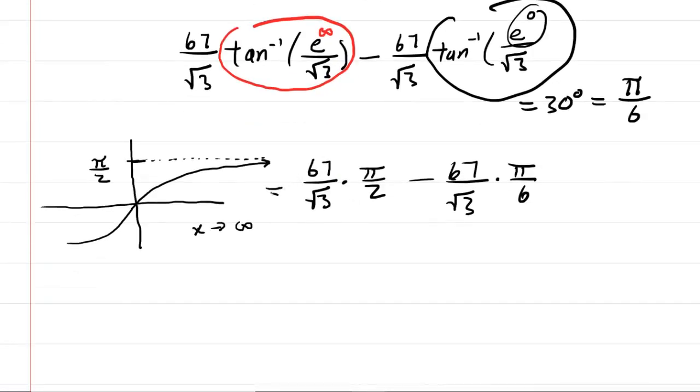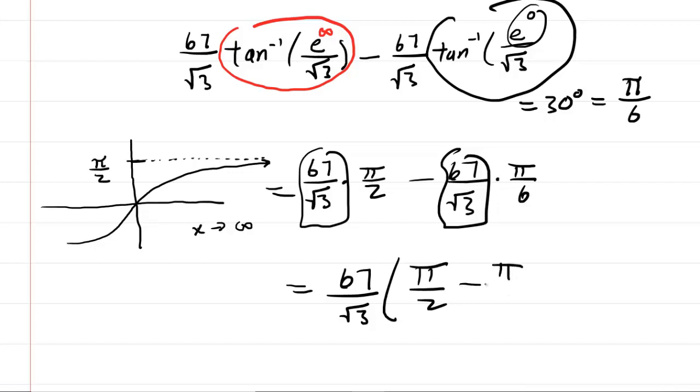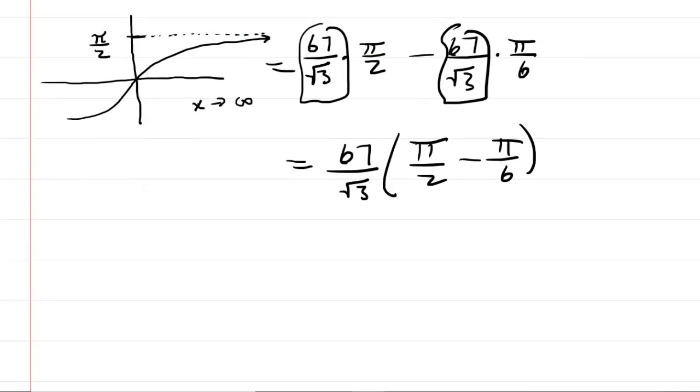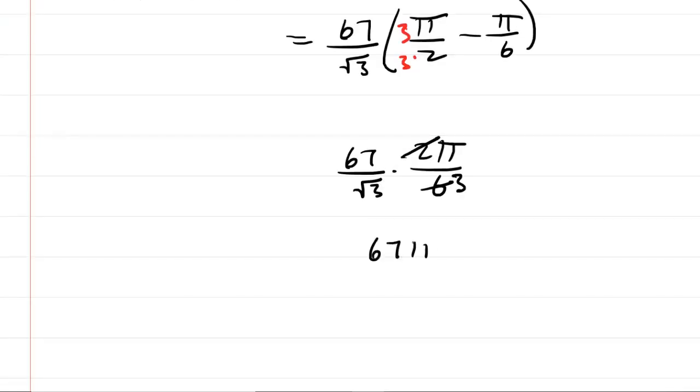To finish off this answer, we can factor out the 67 over square root of 3. This leaves us with π over 2 minus π over 6. We need a common denominator, so multiply this by 3 in both numerator and denominator. Then you'll have 3π minus 1π, which is just 2π, and that will be over 6, which we can reduce. We can divide numerator and denominator by 2, so this becomes π over 3. We've got an answer: 67π over 3 times the square root of 3.